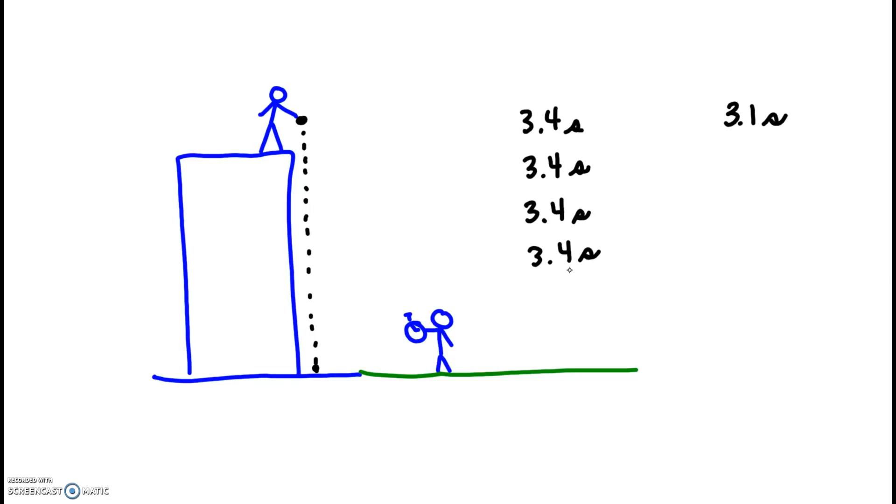Is her data precise? Is it accurate? This data is precise because it is consistent with itself. But is it accurate? No. Because you see how it's off from the correct value. Now that would be fair. That's a reasonable point to make.